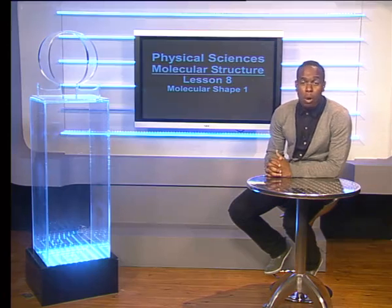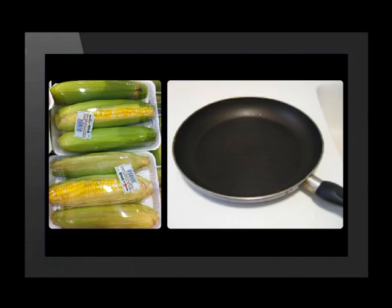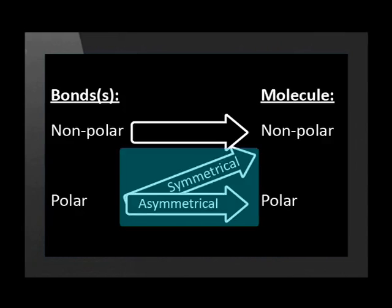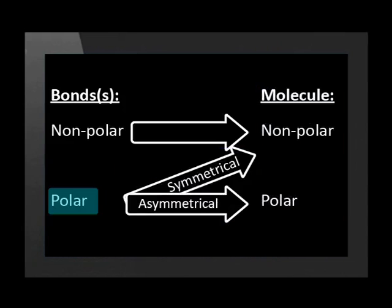Hello grade 11s. Welcome to this first of two lessons on molecular shape. We know that molecular polarity determines properties such as how well surfaces stick together. We have seen that the shape of a molecule determines the polarity of the molecule when the bonds are polar. In this lesson, we learn about a model to determine the shape of a molecule.